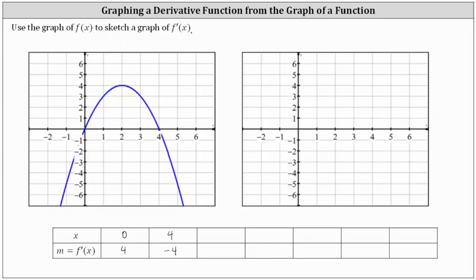Now let's sketch the tangent line at x equals one. The tangent line at x equals one would look like this. Working our way from left to right, from the point of tangency, if we move up two units and right one unit, we find another point on the tangent line. The slope of the tangent line at x equals one is two divided by one, or two. So when x is equal to one, the slope of the tangent line, or derivative function value, is positive two.